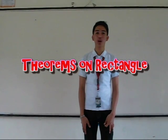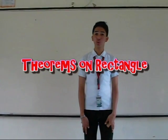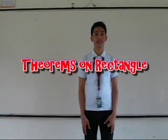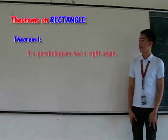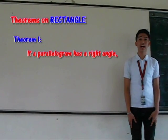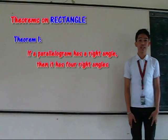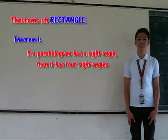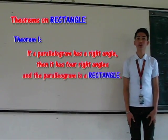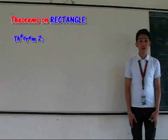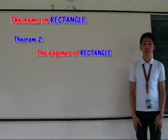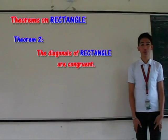If you listened to the jingle presented a while ago, it talks about the theorems on rectangle. Theorem 1: If a Parallelogram has a right angle, then it has four right angles, and the Parallelogram is a rectangle. Theorem 2: The Diagonals of a Rectangle are congruent.